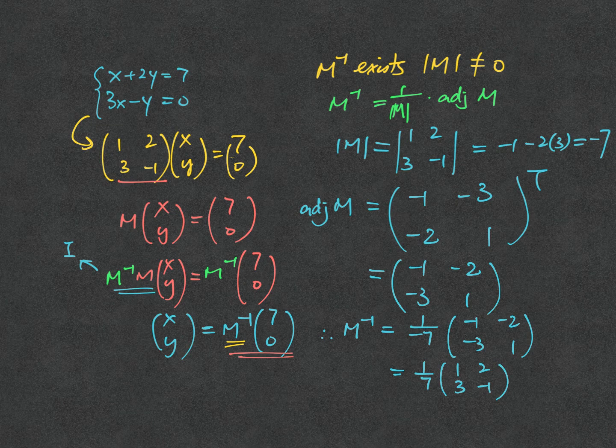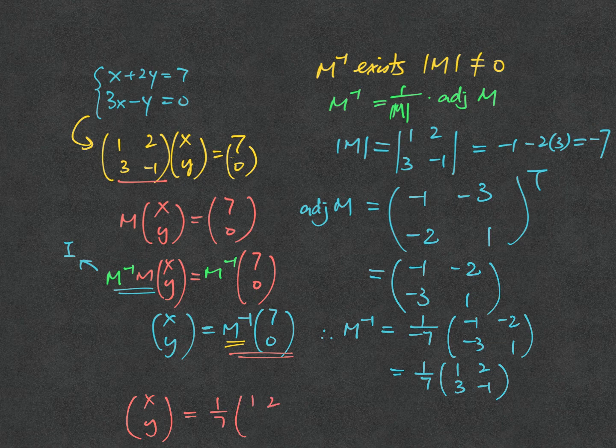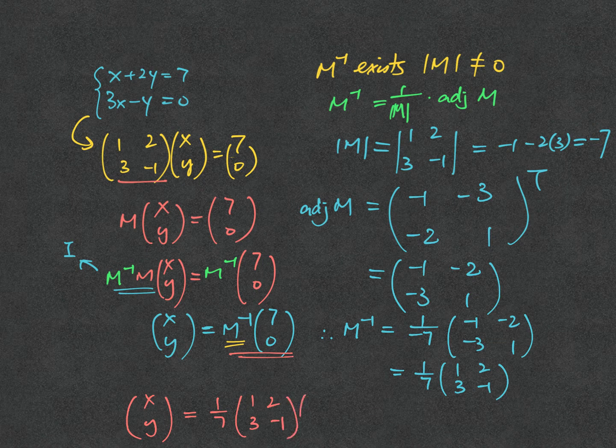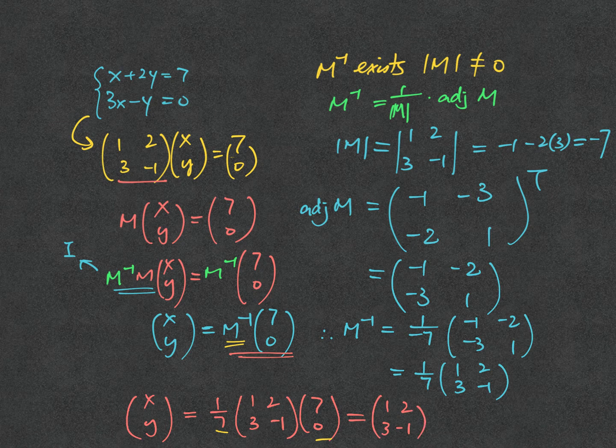Finally, consider the values of x, y, which is equal to M inverse, that means 1 over 7 times (1, 2; 3, minus 1), and then multiplied to (7, 0). For simplicity, 1 over 7 can be cancelled with 7, 0 first. And that's why you have (1, 2; 3, minus 1) multiplied to (1, 0).